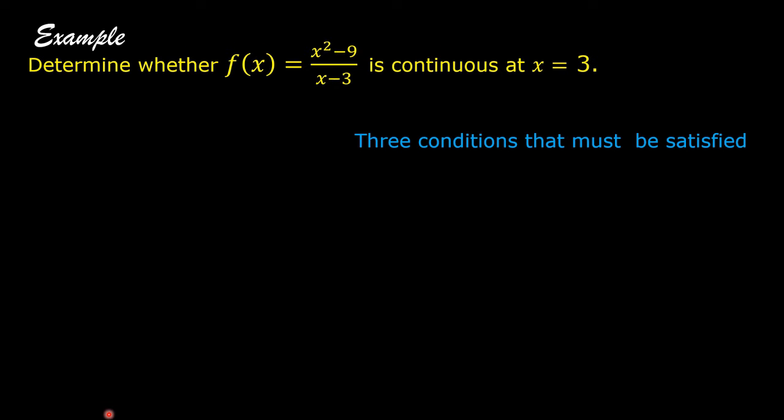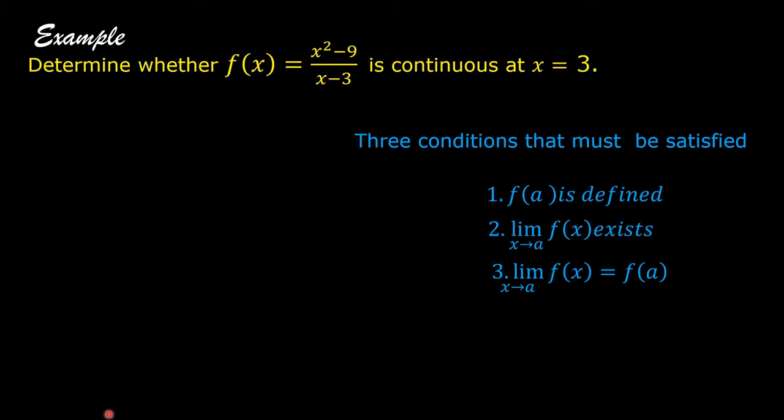These are the three conditions that must be satisfied before we can say that a function is continuous at a point. Number 1: f(a) is defined. Number 2: the limit of f(x) as x approaches a exists. And number 3: the limit of f(x) as x approaches a is equal to f(a).